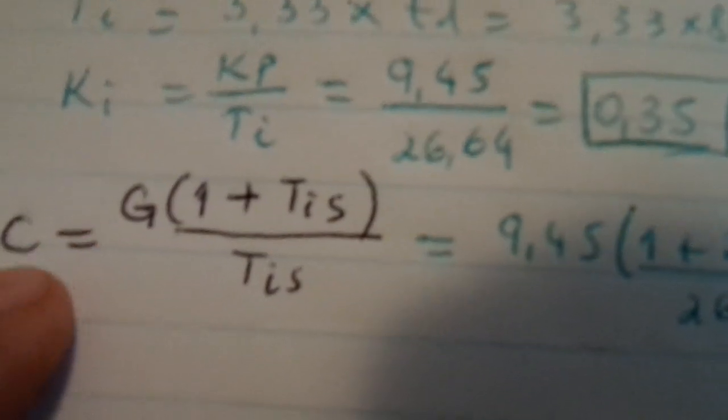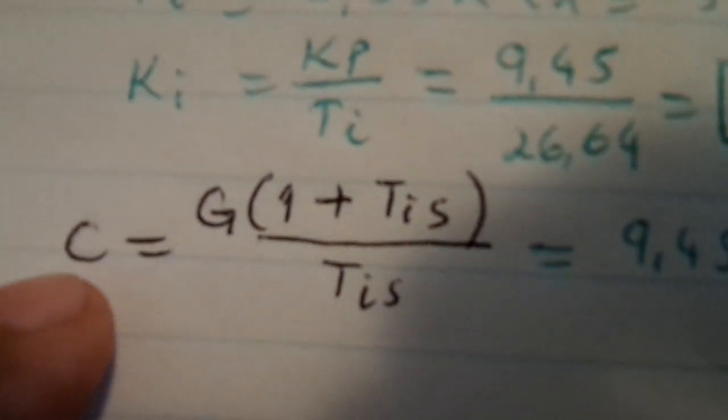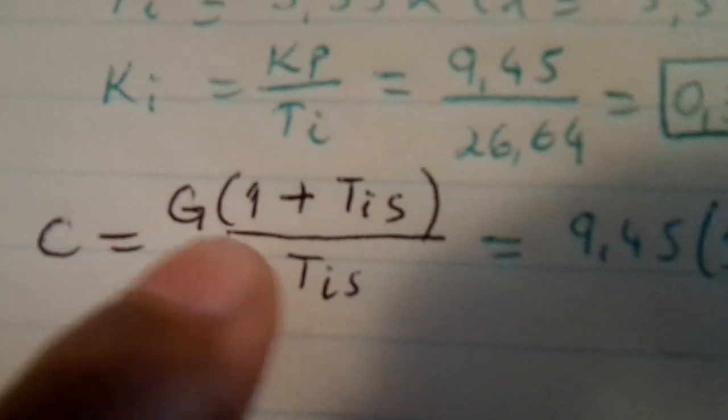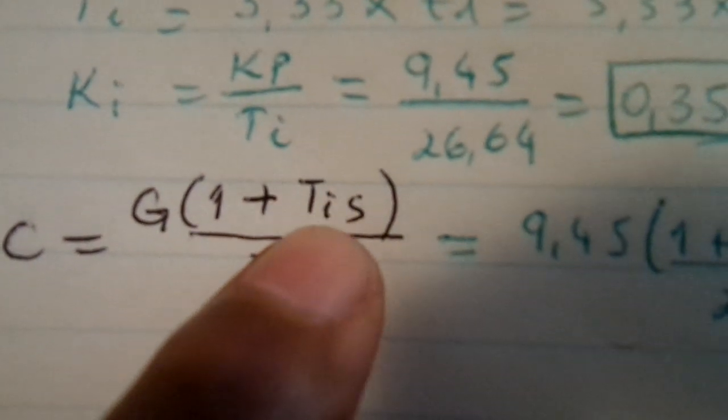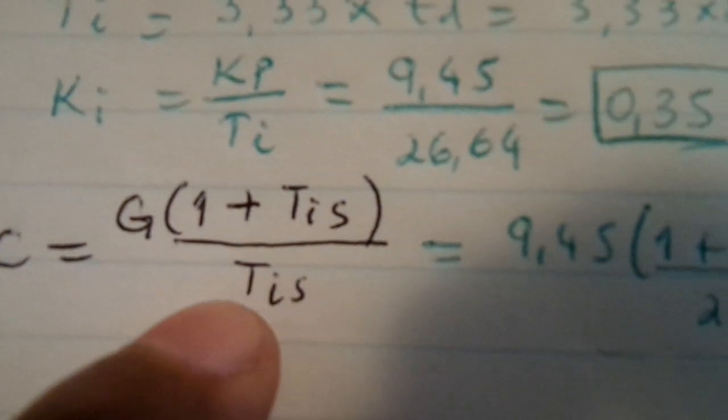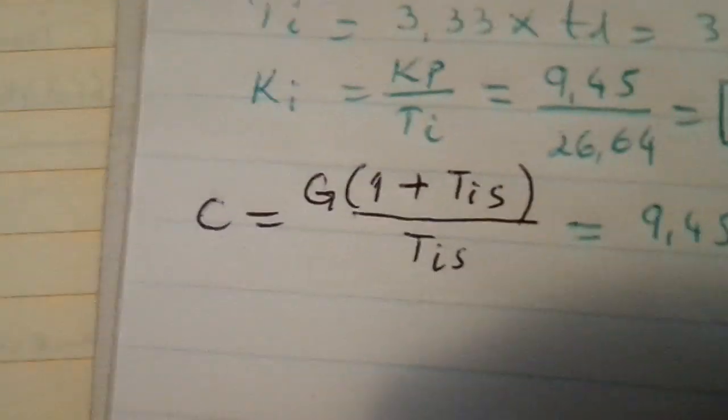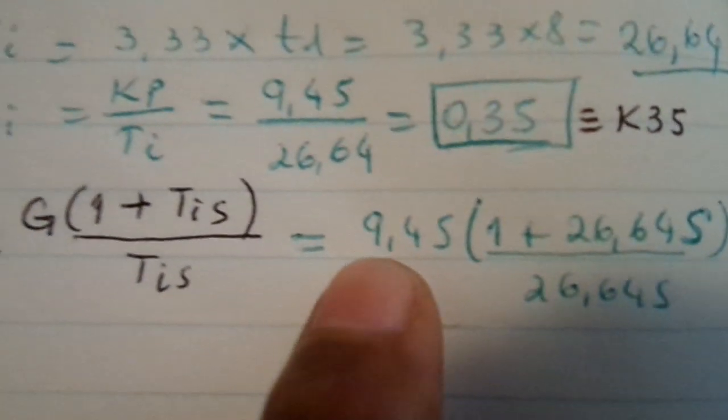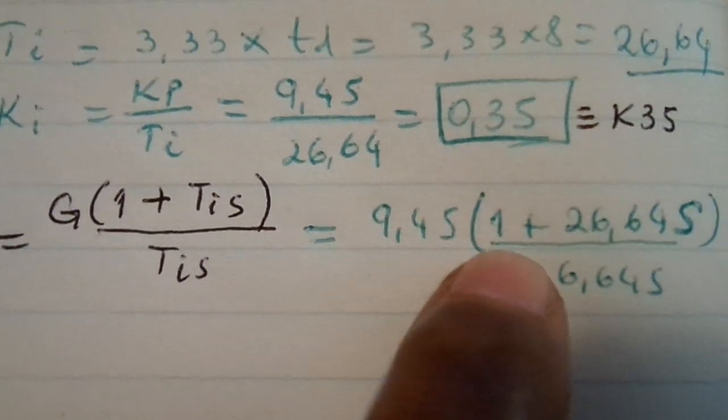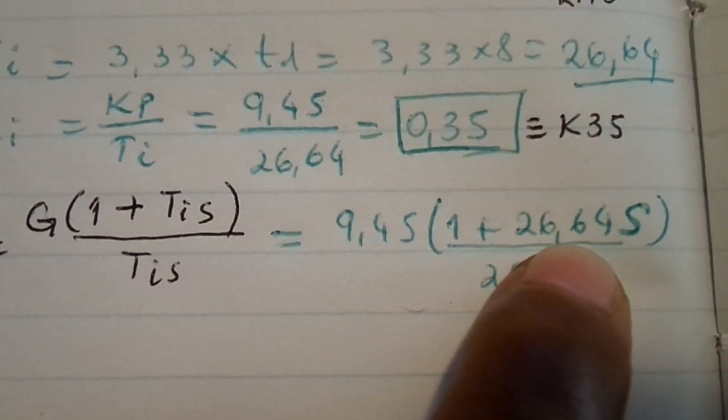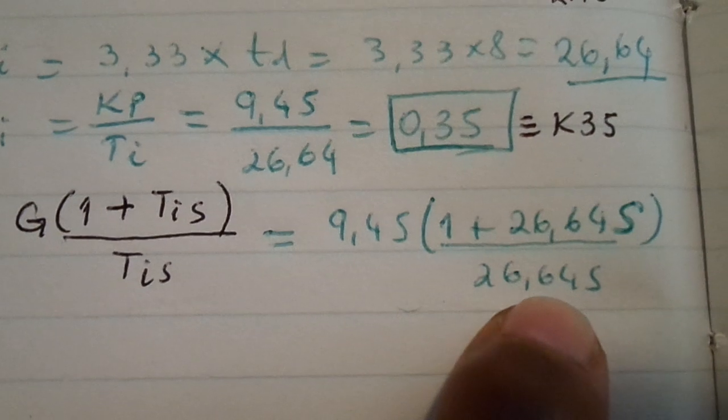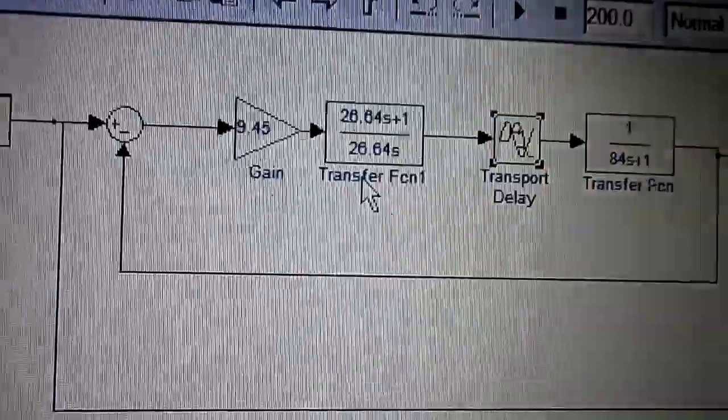So this is the formula for the controller: the gain times one plus integral time over integral time multiplied by s, all in Laplace domain. And that's what we got there: gain one, integral time, and this is what I will apply here on my controller.